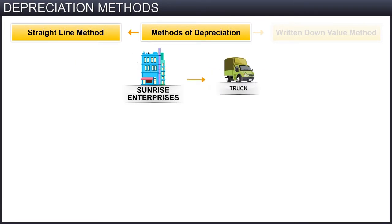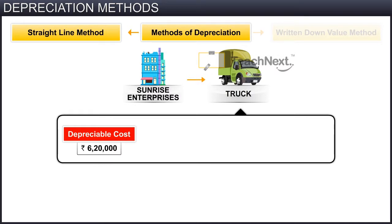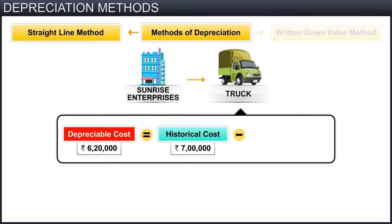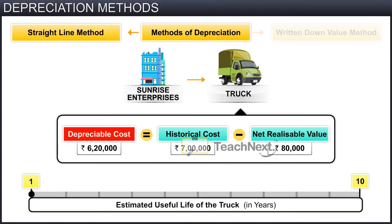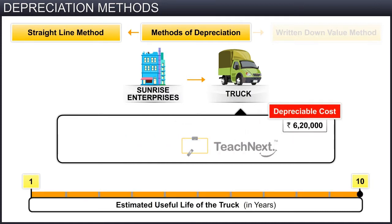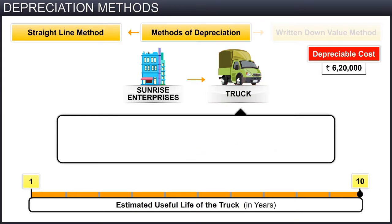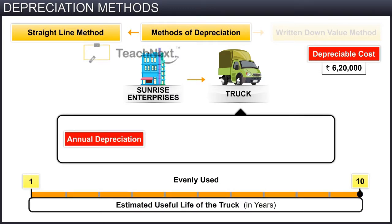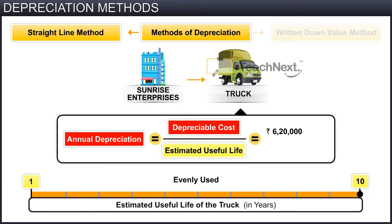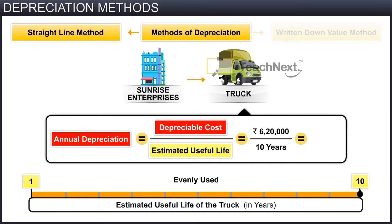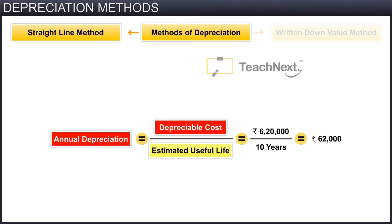Sunrise Enterprises purchased a truck whose depreciable cost is 6,20,000 rupees. This is its historical cost of 7 lakh rupees minus its expected net realizable value of 80,000 rupees. The estimated useful life of the asset is 10 years. Based on the assumption that the truck is evenly used over its anticipated life of 10 years, the depreciation amount per year will be its depreciable cost divided by its estimated useful life — that is, 6,20,000 rupees divided by 10 years — giving a depreciation of 62,000 rupees per year.